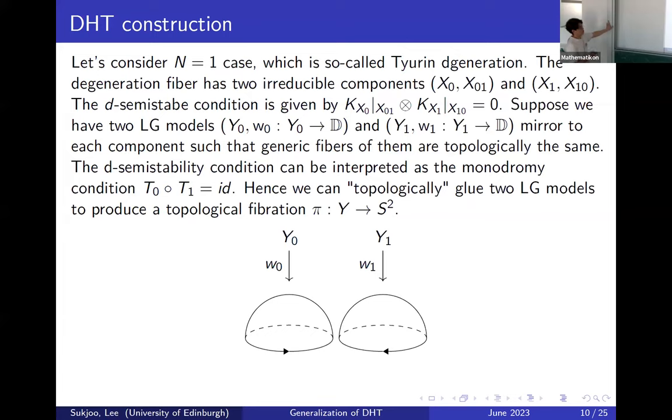Now suppose that we have two Landau-Ginzburg Fano Calabi-Yau pairs, and then that's the Landau-Ginzburg models of these. The mirror to each component is a conforming degeneration fiber. We want to impose some topological conditions in the sense that around the boundary, we have topological matching at the same time. It reflects the fact that we can actually glue these together to make sure it's normal crossing.